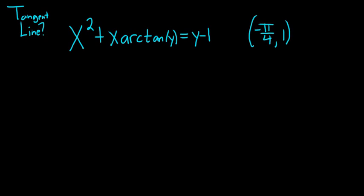Find the equation of the tangent line to the graph of this equation at the point negative pi over 4 comma 1.